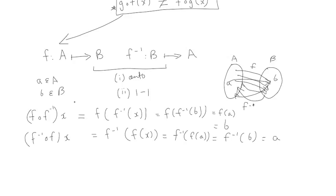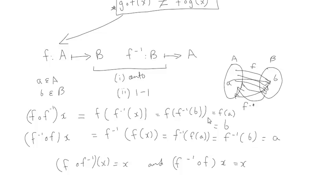A very interesting thing to notice is that whatever we plug in at the very beginning of the composition, we get back out — so the composition of a function and its inverse is equal to the input x. This result holds for the reverse order as well. In the next video, we're going to be ending this short introduction to functions and sets by talking about drawing basic graphs and what happens when we shift the graph along the x-axis and the y-axis, and when we multiply it by a particular scalar.